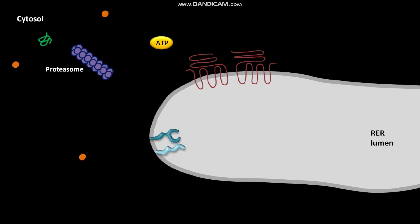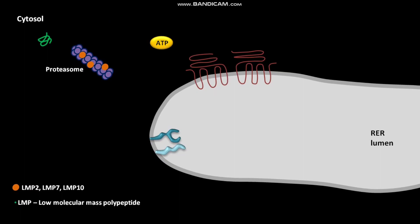In the cytosol of eukaryotic cells, proteins like LMP2, LMP7, and LMP10 associate with a proteasome. LMP stands for Low Molecular Mass Polypeptide. This association changes the catalytic specificity of the proteasome. Due to this changed catalytic specificity, cytosolic antigen protein undergoes degradation in the central channel of the proteasome to produce peptides that bind to class I MHC molecules.